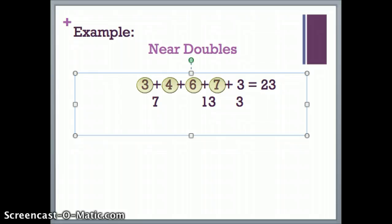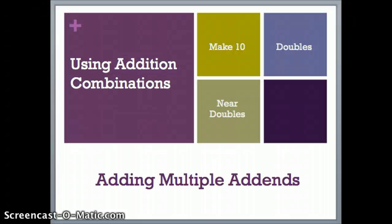For all three of the equations, the sum or the answer was 23. I used make 10, doubles, and near doubles to help me solve addition combinations. Remember that these addition combinations help me solve when adding multiple addends much easier than trying to add all the numbers at one time. If you look for addition combinations you know, then adding multiple addends can be a simple way to solve problems.